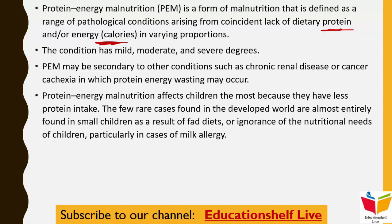This condition has 3 categories: mild form, moderate form, and severe form. PEM can also be secondary to other conditions such as chronic renal disease and cancer cachexia, in which protein energy wasting may occur.